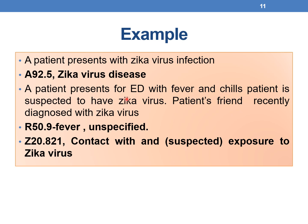Example 2: A patient presents to the ED with fever and chills and is suspected to have Zika virus because a friend was recently diagnosed. Here, code the presenting condition — fever, R50.9 (fever, unspecified) — followed by Z20.821 (contact with and suspected exposure to Zika virus). Whenever the physician documents 'suspected,' 'probable,' or 'possible,' do not code A92.5; code only confirmed cases, and confirmation does not require test documentation — a simple physician diagnostic statement is sufficient.